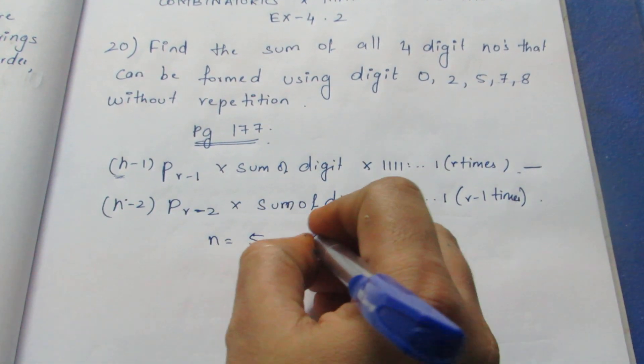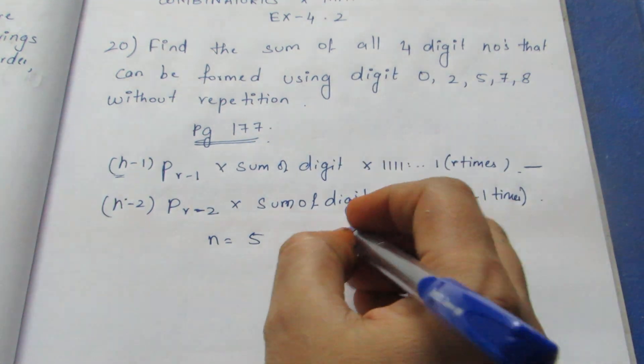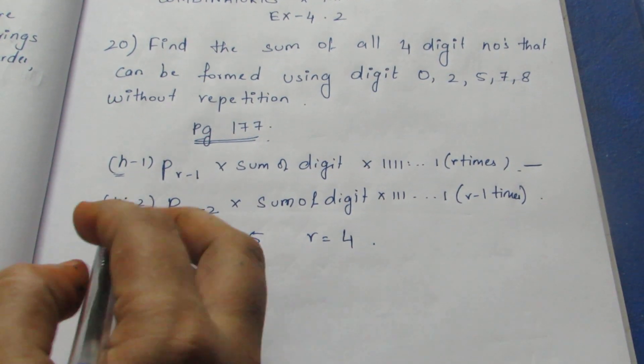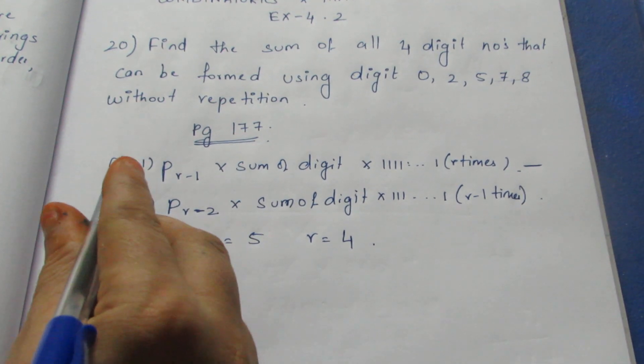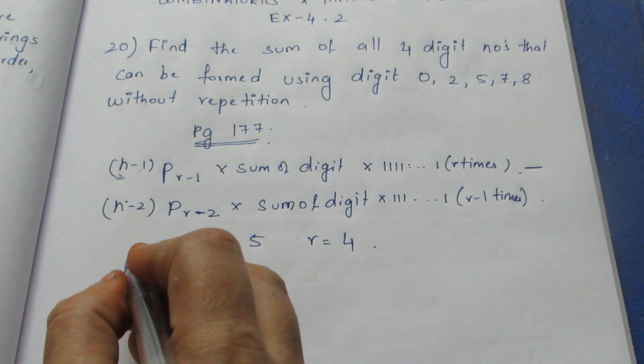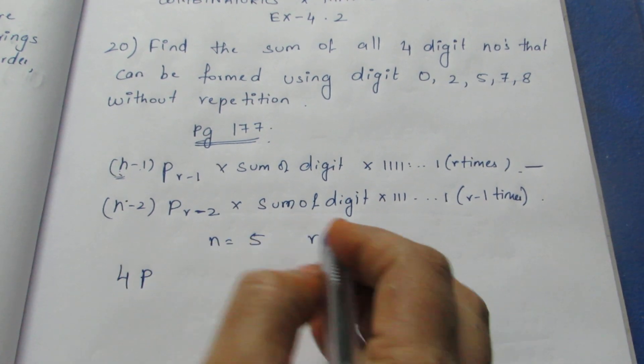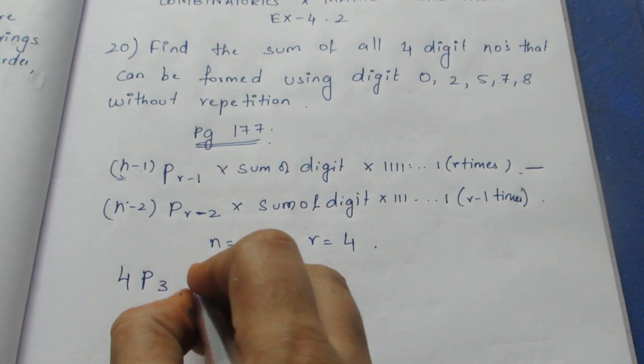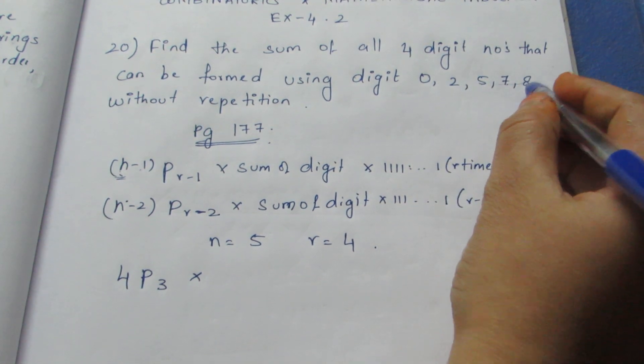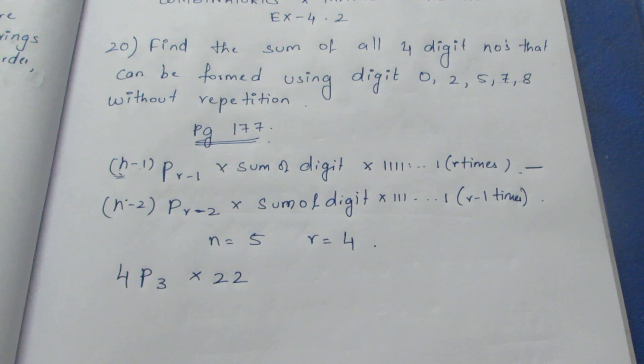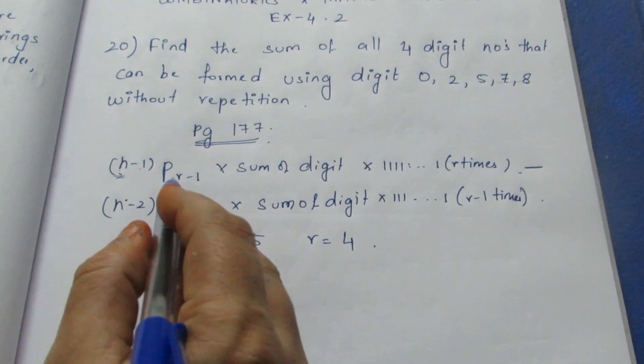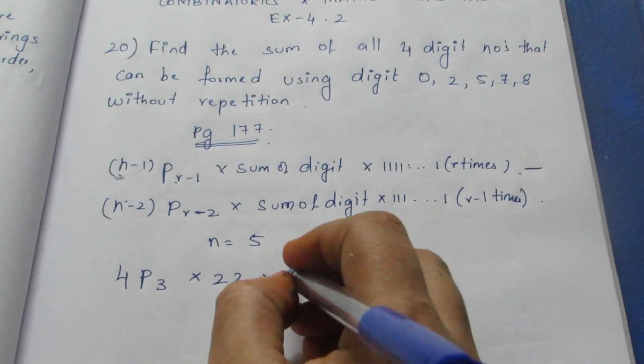Now n is 5, so 5 minus 1 is 4. 4P(r minus 1) is 4P3 into sum of the digits: 0 plus 2 is 2, plus 5 is 7, plus 7 is 14, plus 8 is 22. So sum of the digits is 22, into r. This r is 4, so 4 ones: 1111.